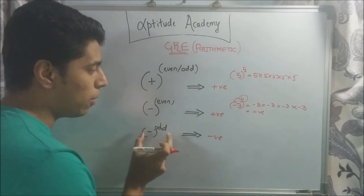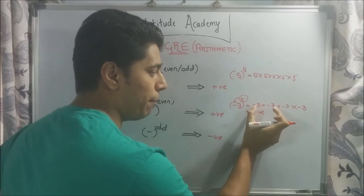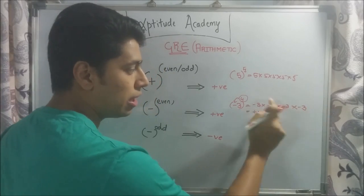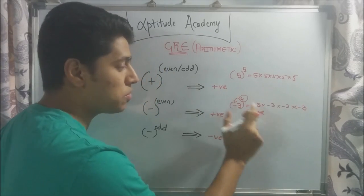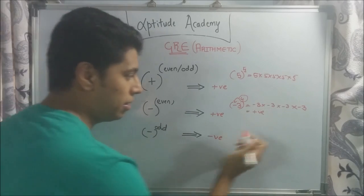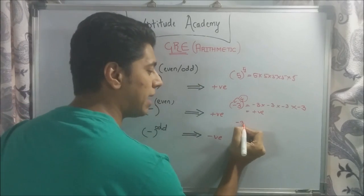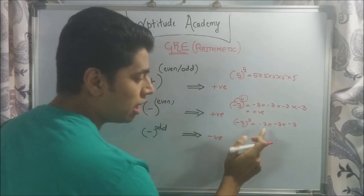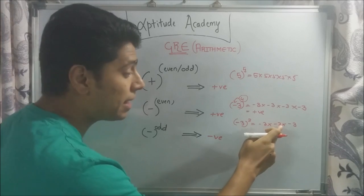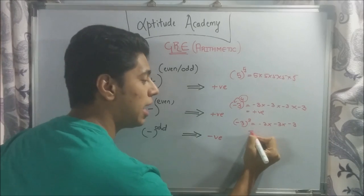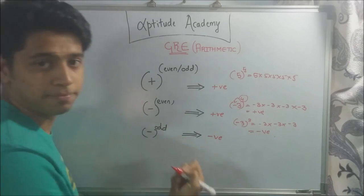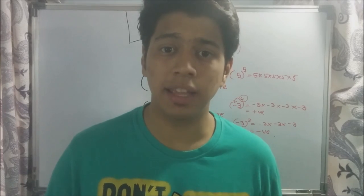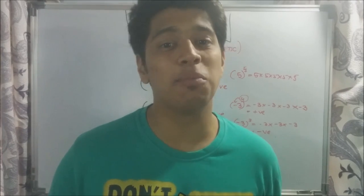But if you have an odd power, if you make pairs — minus into minus is plus — they will always be plus. That's why even powers result in positive numbers. But if it's an odd power, like minus 3 raised to 3: minus 3 into minus 3 into minus 3. Minus into minus is plus, but it's again multiplied by a negative number, so the answer will be negative. So for a positive number it's always positive; for a negative number, if the power is even it's positive, if it's odd it's negative.